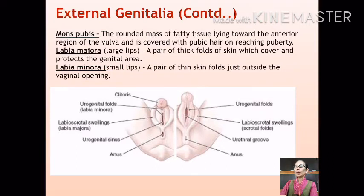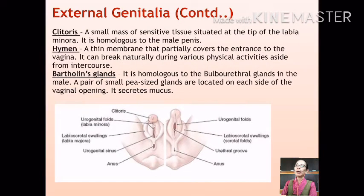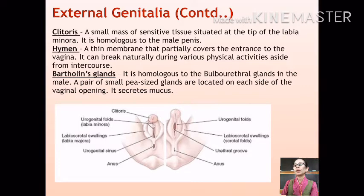The vulva is protected by a pair of larger outer skin folds called the labia majora and a pair of smaller inner skin folds called the labia minora. At the tip of the labia minora is a small mass of sensitive tissue called the clitoris, which is considered homologous or similar to the male penis. A thin membrane that partially covers the vaginal opening is called the hymen. The state of the hymen is not a reliable indicator of virginity, as the hymen can break naturally during various physical activities aside from intercourse.